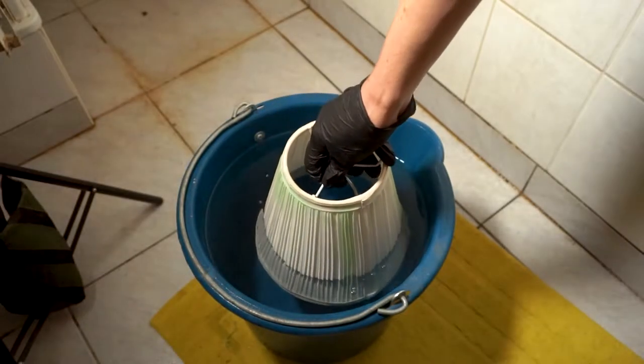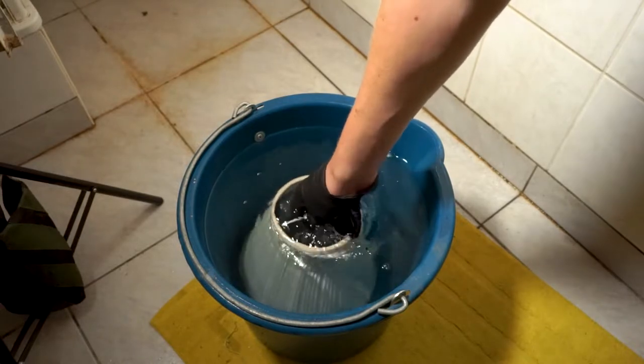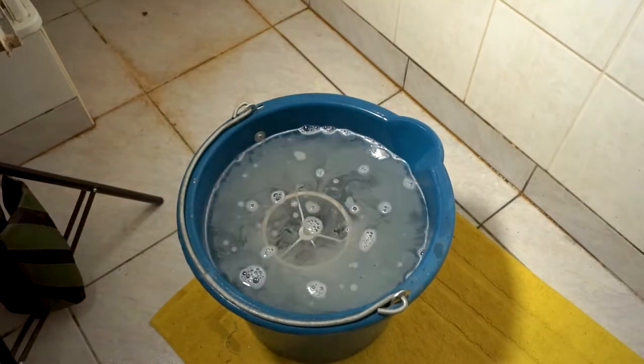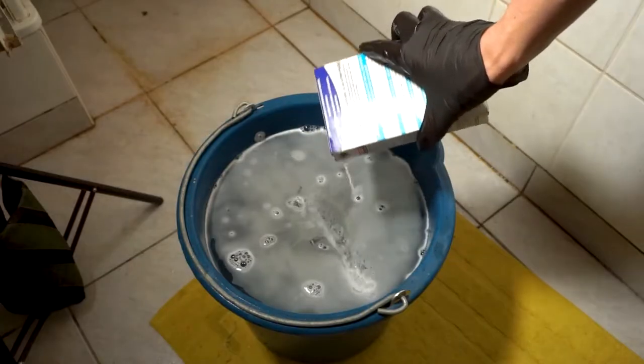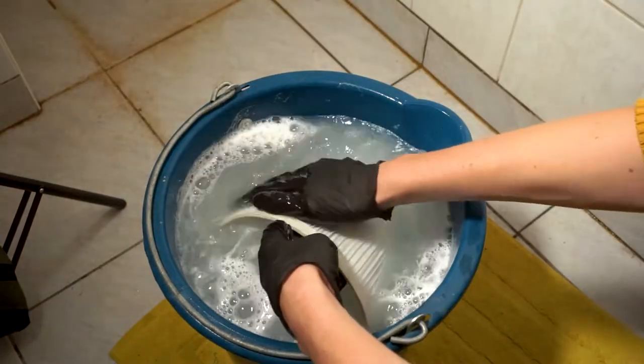Once the stains are pre-treated, fill a bucket with warm water. You can add some additional soap or whitening powder, and carefully immerse the lampshade in the water.